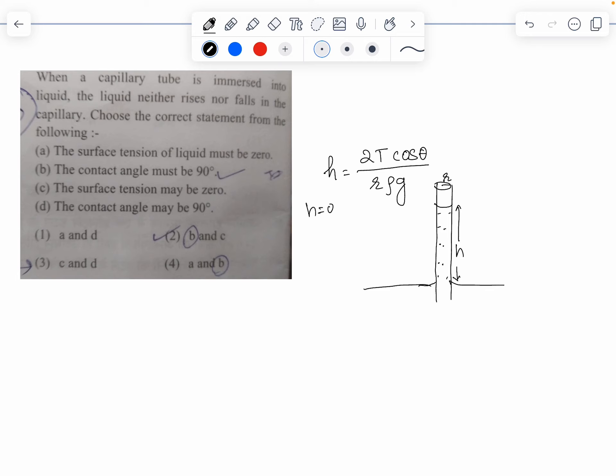If h is 0, then what can happen here? For g, I can't say 0 or infinity. Or rho infinity or r infinity - all these changes. So the liquid, anyway, surface tension may be 0.